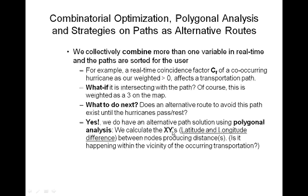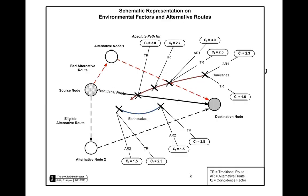We calculate the latitude and longitude between nodes, producing distances, to determine whether a hazard is happening within the vicinity of the occurring transportation. This is a schematic representation of how a path is rejected even as an alternative one from source node shipping goods to its destination node. The upper triangle is rejected since the coincidence factor for a hurricane intersecting the path is high, but once it passes, the value reduces. For the direct path, when it gets close, the value goes up, so the safe solution temporarily would be the lower triangle for a safe journey.